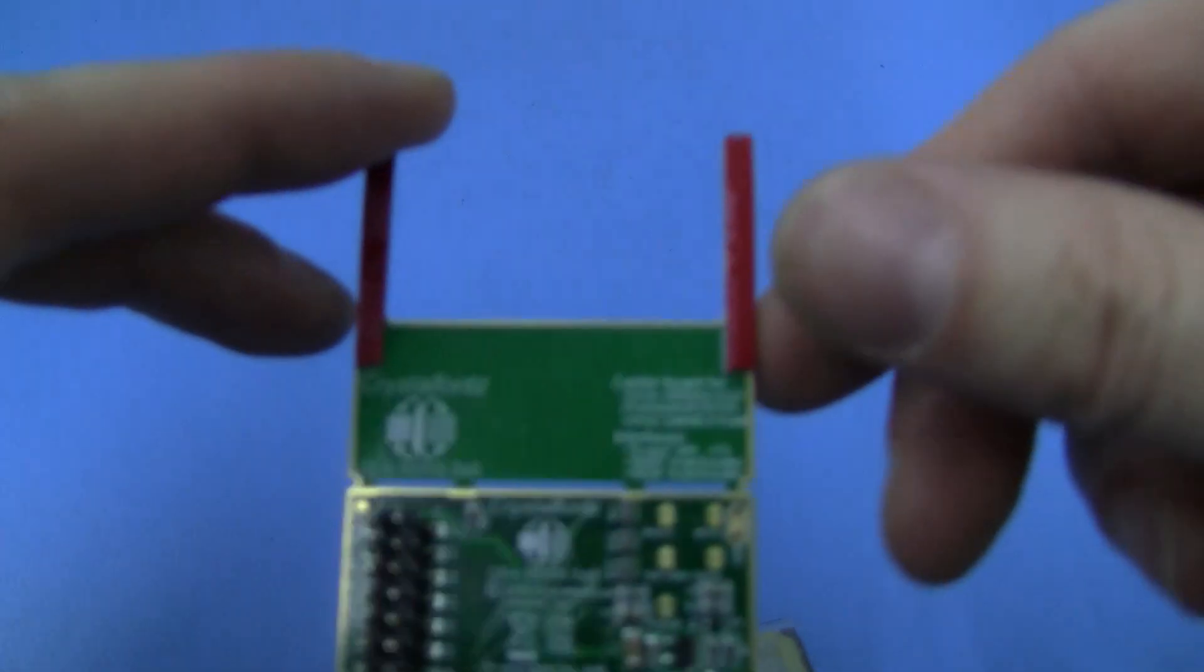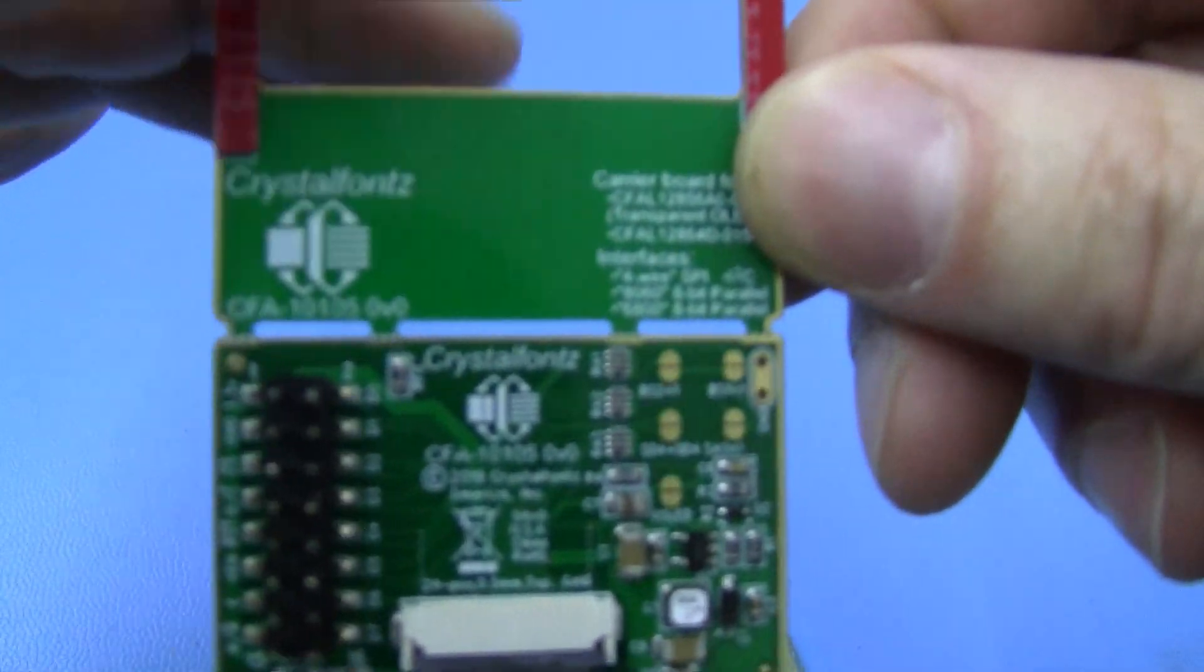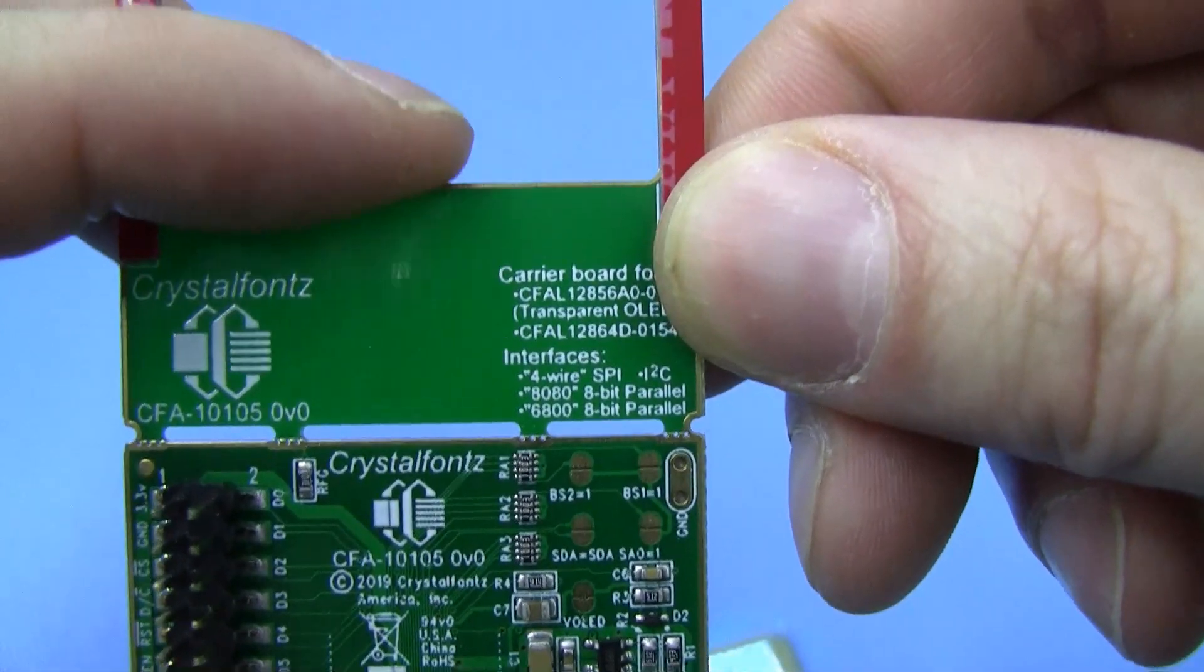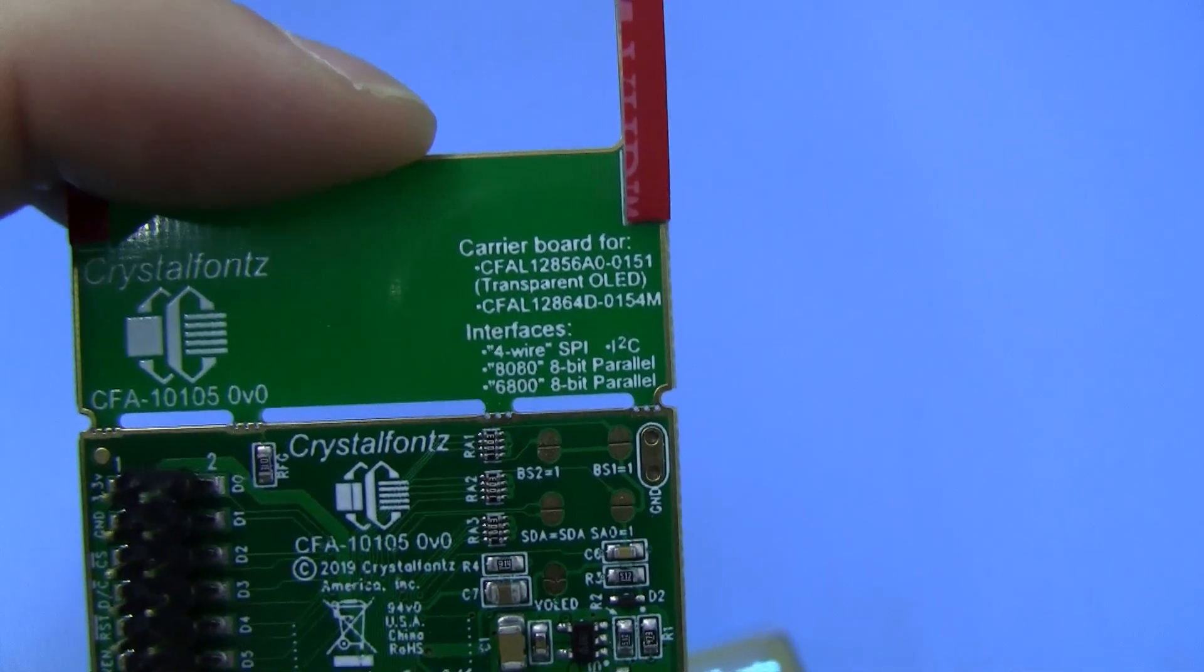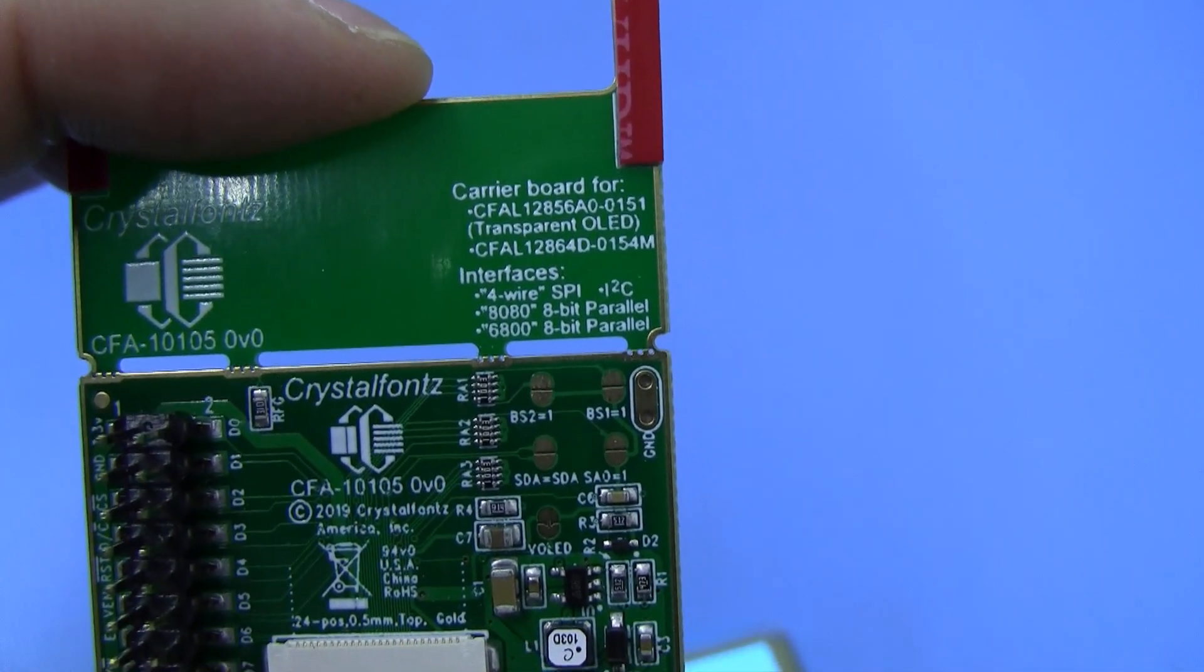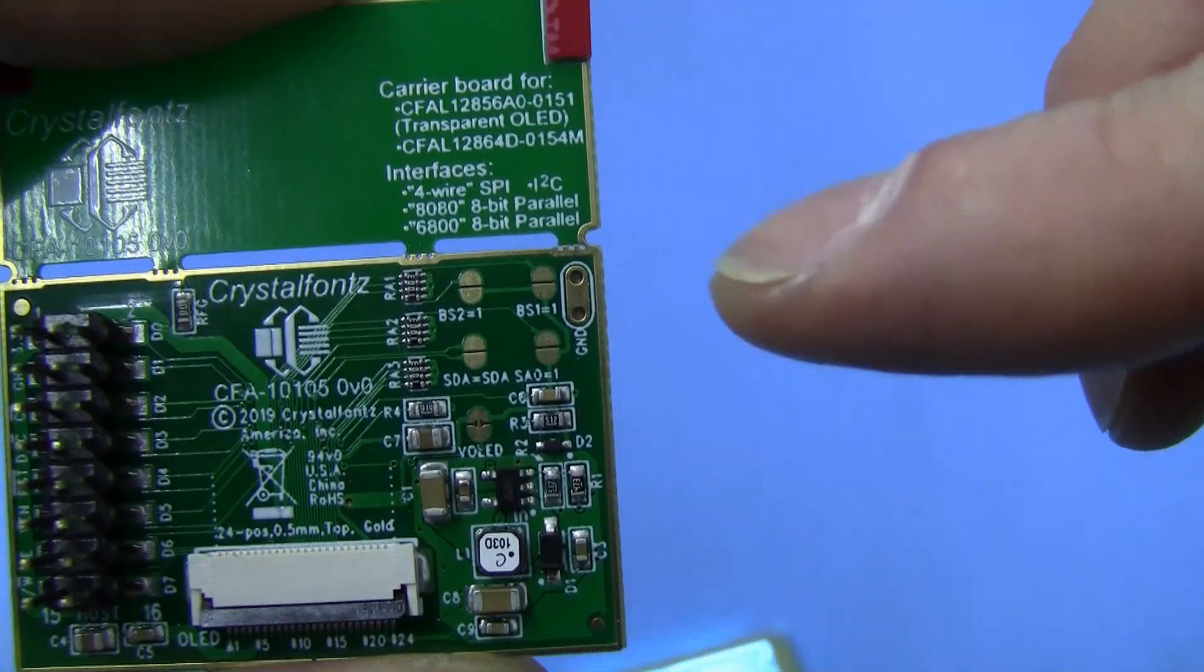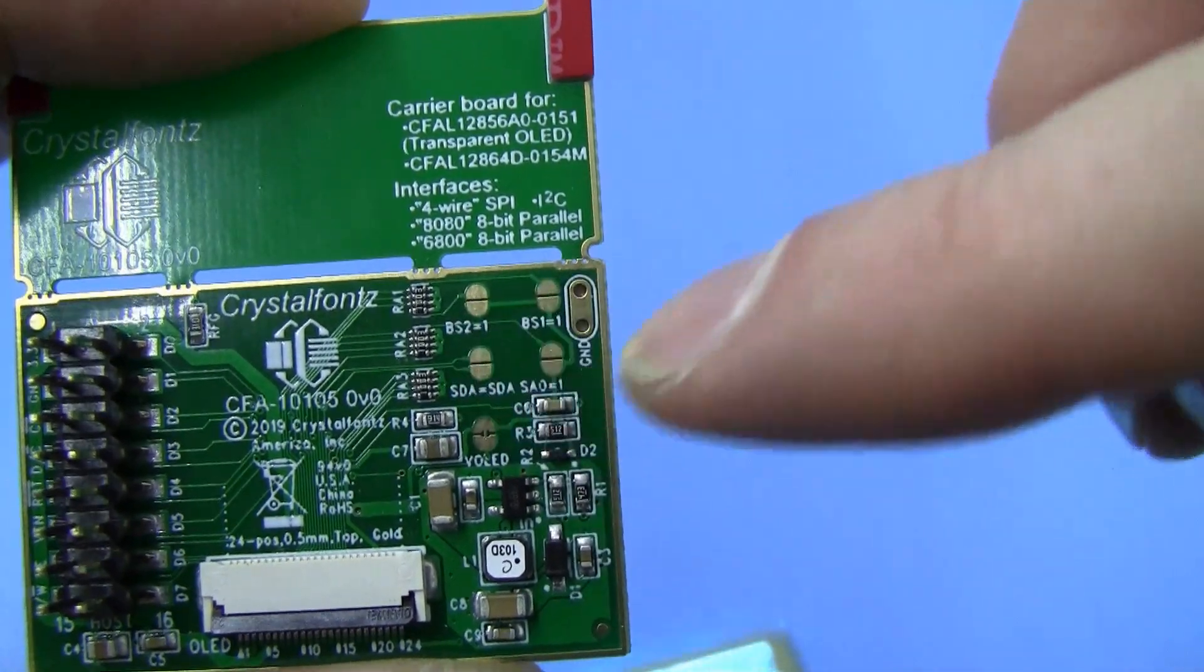Other key features of this breakout board is it supports four interfaces including 4-wire SPI, I2C, 8080 parallel and 6800 parallel and they're all configurable via these jumpers.